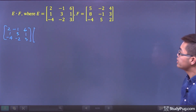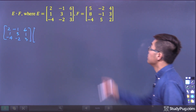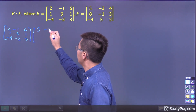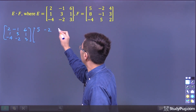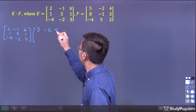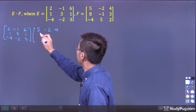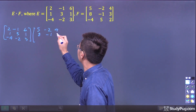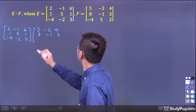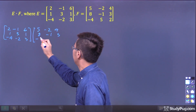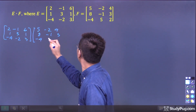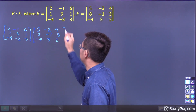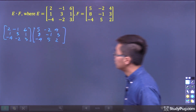Matrix F is going to be: 5, negative 2, 4, 8, negative 1, 3, and negative 4, 5, 2. Note that the first value is a 5, not an S.